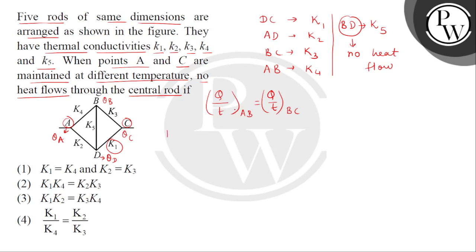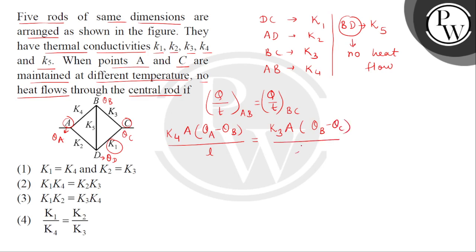हम rate of heat flow को express कर सकते हैं — यहाँ पर AB rod के लिए K4 multiplied by A, multiplied by the temperature difference theta A minus theta B, divided by length L. Same dimensions बोला हुआ, area is also same. Again BC rod के लिए rate of heat flow: K3 multiplied by A, multiplied by theta B minus theta C divided by L. A and L cancel हो जाएंगे, तो हम ratio develop कर सकते हैं: theta A minus theta B divided by theta B minus theta C equals to K3 divided by K4. Let this be equation number 1.